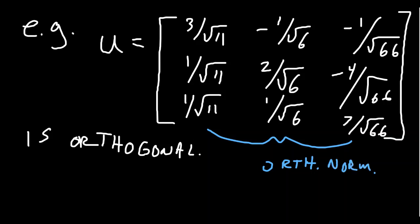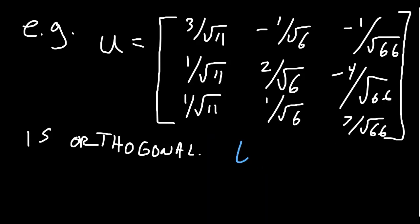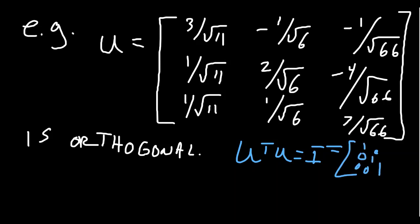That's one way to show the matrix is orthogonal. The other way is simply to use the definition: take U^T U and show it equals the identity. I'm not going to do that calculation here — I encourage you to pause the video and check that U^T U gives the 3×3 identity with ones on the diagonal and zeros everywhere else.